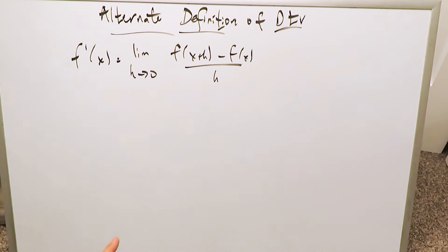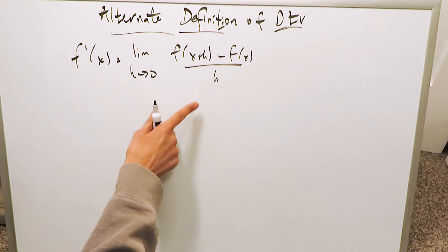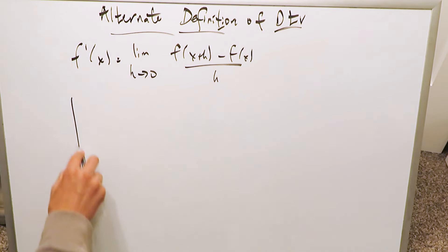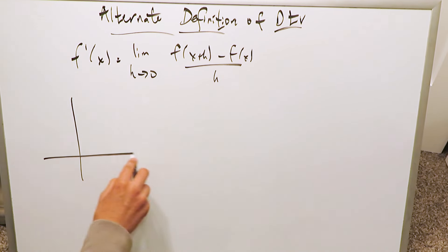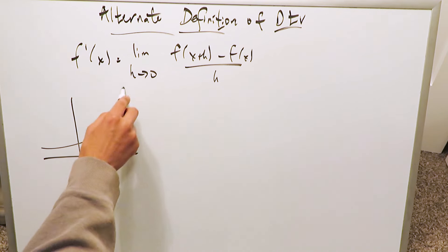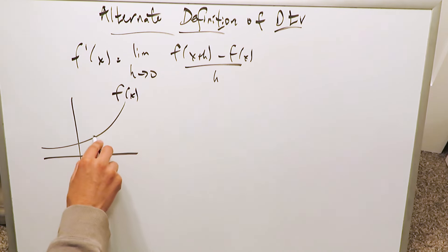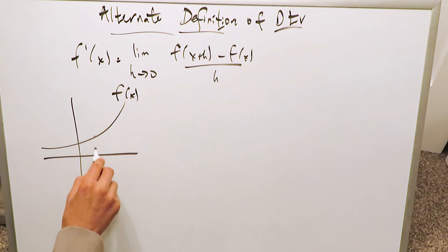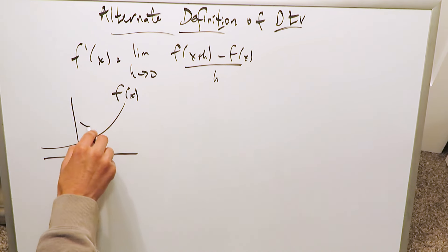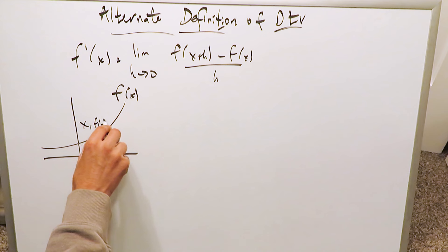The slope of a secant line, by means of this limit, is becoming a slope of a tangent line. Let's look at everything with regards to an alternate definition of a derivative. You can come up with a very good definition by means of a good diagram. If this represents a particular function f of x, we have a particular point of interest, and with regards to an x and y coordinate, you have x comma f of x.